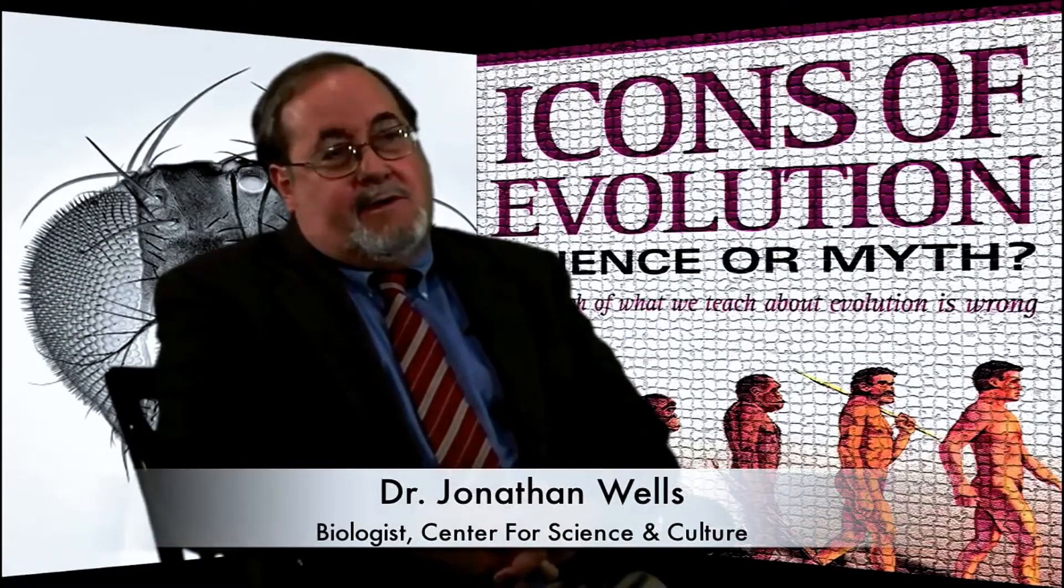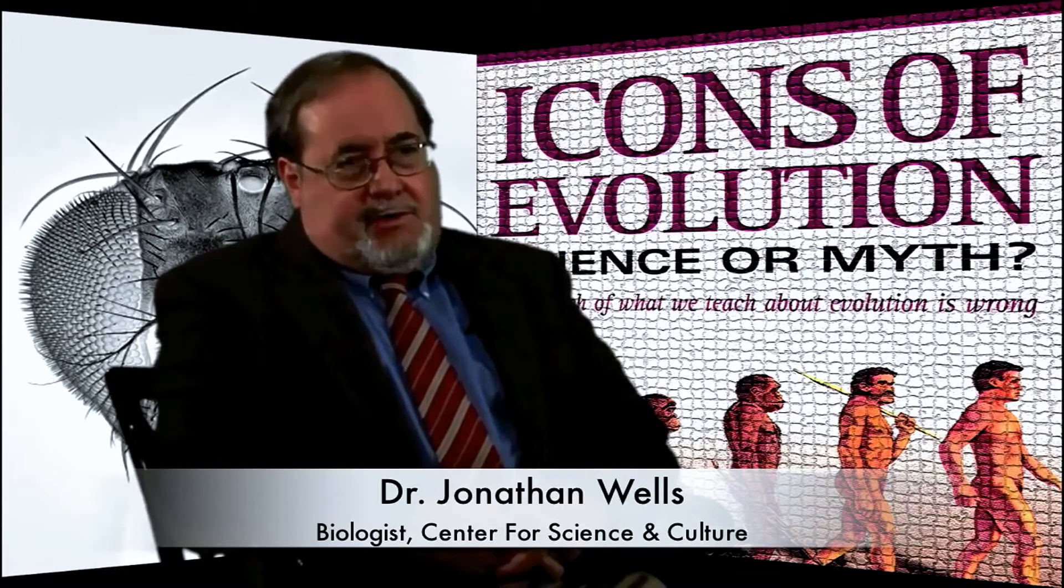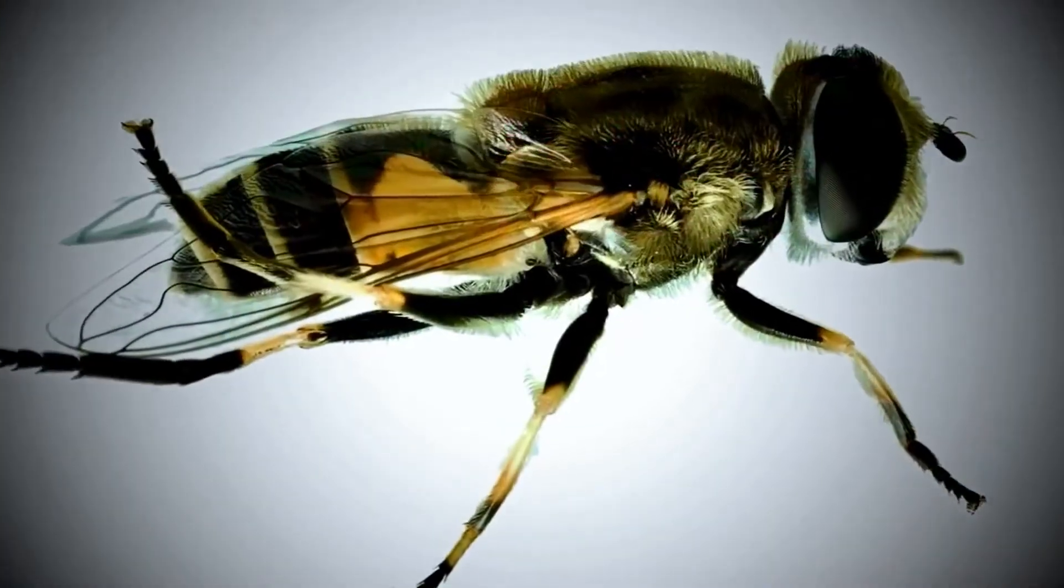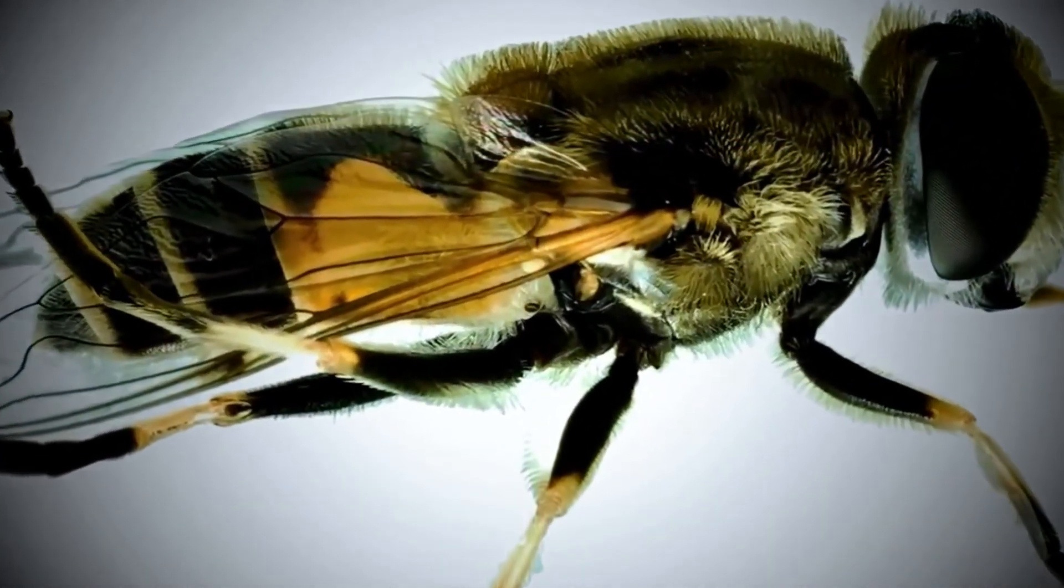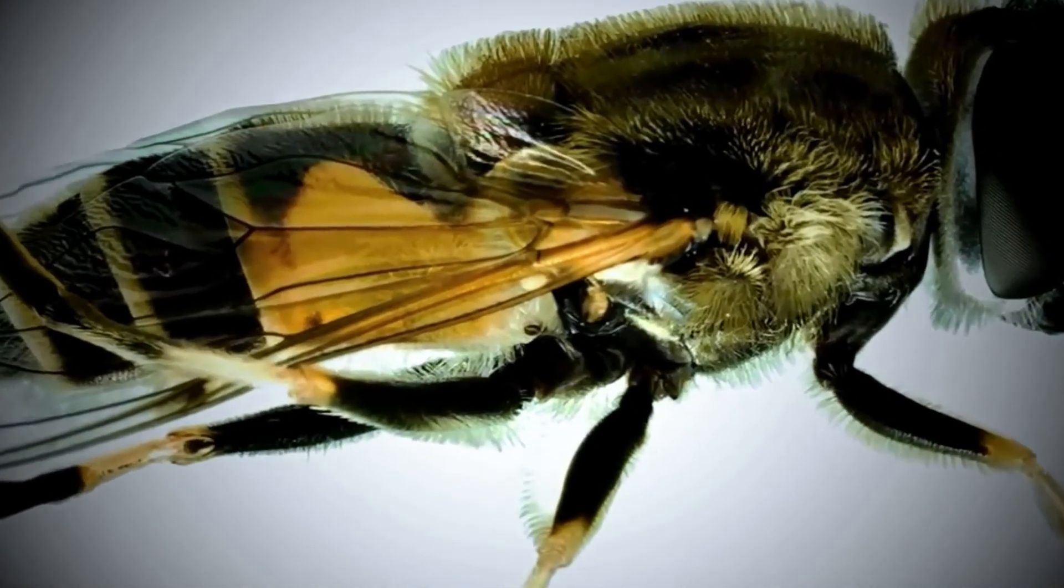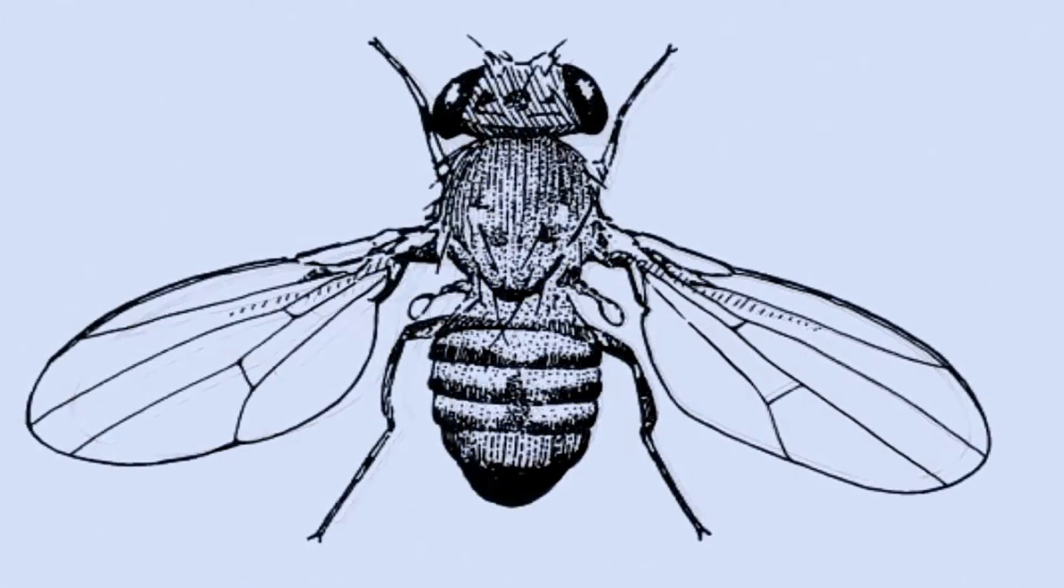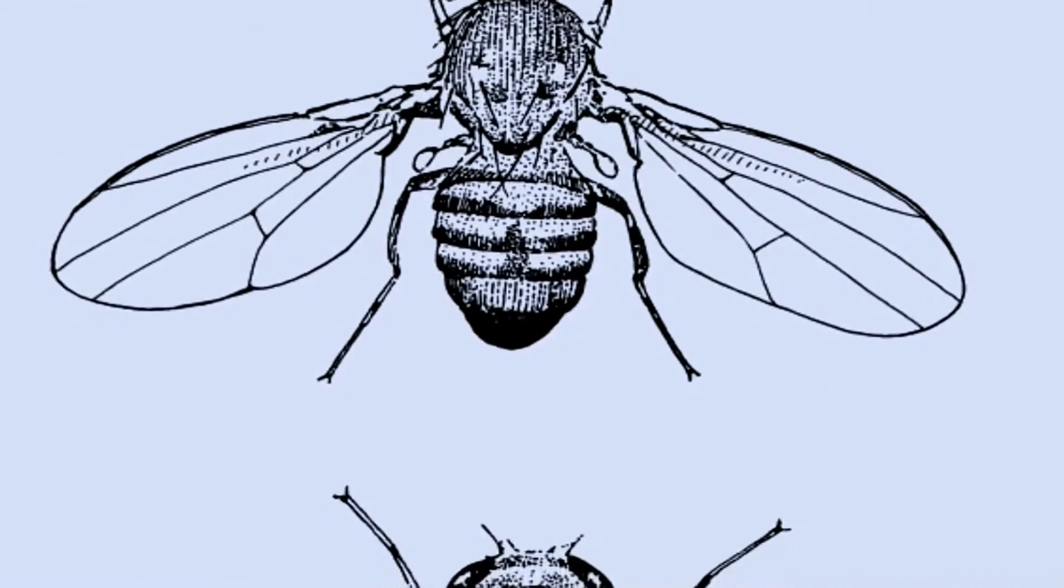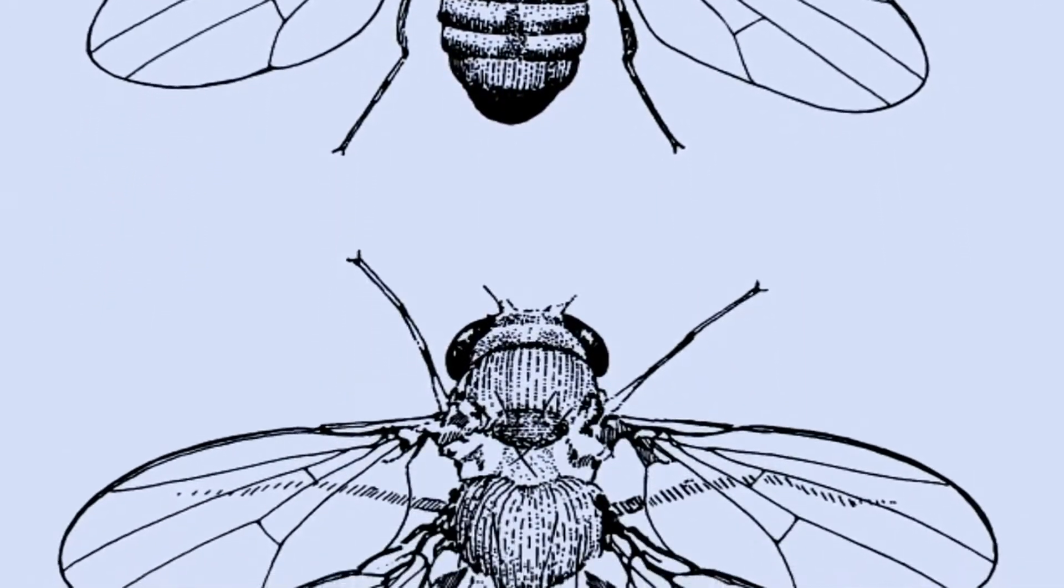One of the icons of evolution that I wrote about is the four-winged fruit fly. Now, fruit flies normally have two wings, and behind those wings are a pair of what are called balancers, that vibrate, oscillate rapidly in flight to stabilize the fly's flight. But if you combine three mutations very carefully in a fruit fly embryo, you can produce a fruit fly with four normal-looking wings, two pairs.